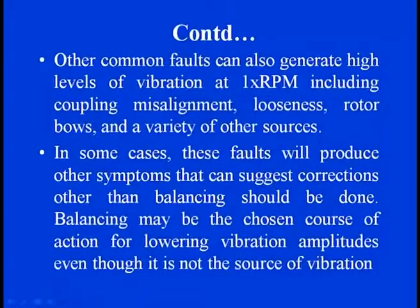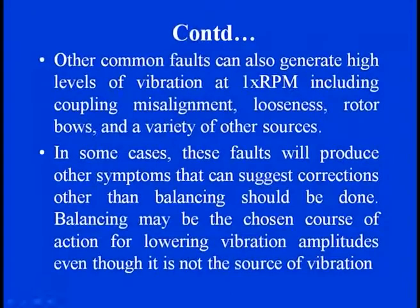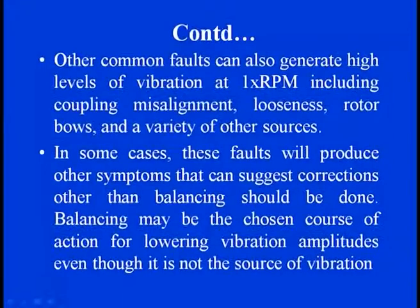Other faults can generate high levels of vibration which can include 1×RPM — like coupled misalignment, looseness, rotor bows, or other sources. But in some cases their faults show different kinds of symptoms because different corrective measures are required. Balancing may be chosen as the course of action for lowering the vibration amplitude, even though it is not the actual source of vibration. So sometimes this is one of the common corrective measures one can adopt for unbalance, eccentricity, misalignment, or looseness features.